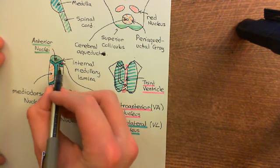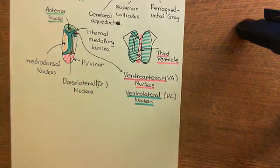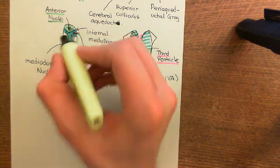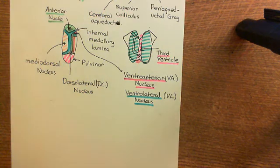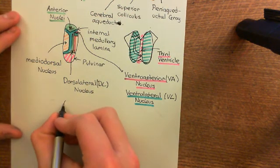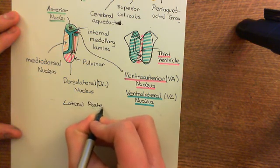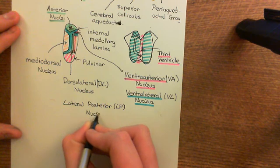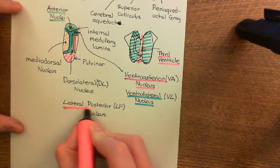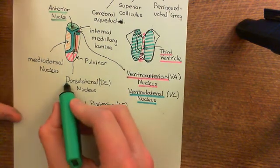Sitting next to the dorsolateral nucleus — and I'm sorry this is becoming so cramped, we'll draw another picture to make it more clear — the one sitting next to the dorsolateral nucleus, which I'll colour in red, is called the lateral posterior nucleus, abbreviated to the LP nucleus of the thalamus. So this one is here in red, and the dorsolateral nucleus — the DL nucleus — was there in green.